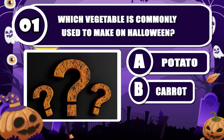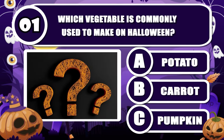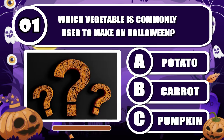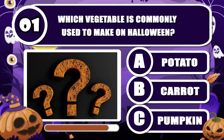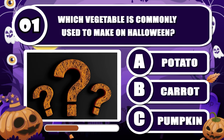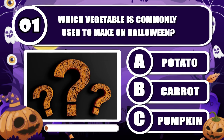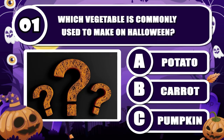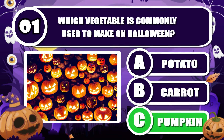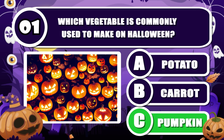Which vegetable is commonly used to make jack-o'-lanterns on Halloween? The correct answer is pumpkin.